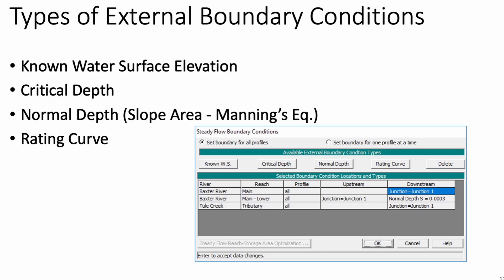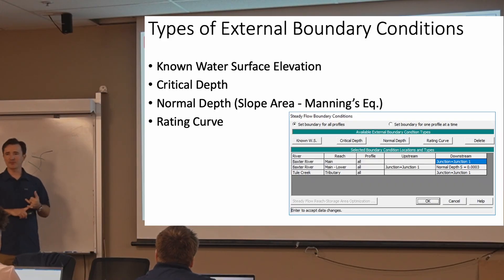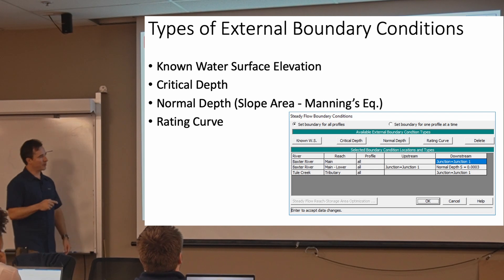Types of external boundary conditions. By external, I mean at the ends of the model, at the upstream end or downstream end. The types that you can have are the known water surface elevation, you can have a critical depth, a normal depth. So this normal depth, in this case, is a stage boundary condition. Based on the flow, it computes a normal depth and specifies that stage. And the user specifies a friction slope and a roughness coefficient at the boundary. It uses Manning's equation to figure out what that stage should be.